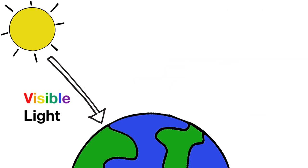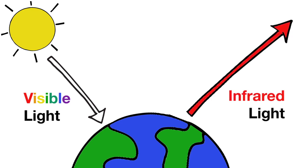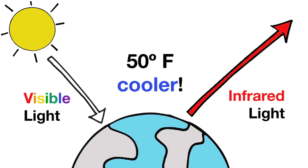Without this greenhouse effect, caused by these greenhouse gases in the atmosphere, the Earth's average surface temperature would be about 50 degrees Fahrenheit cooler, which is well below the freezing point for ice.